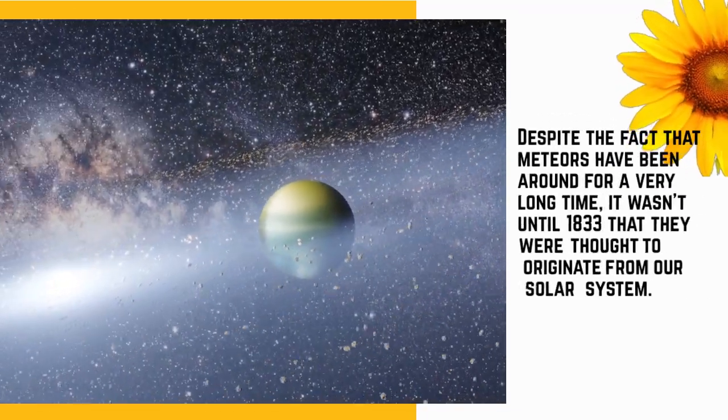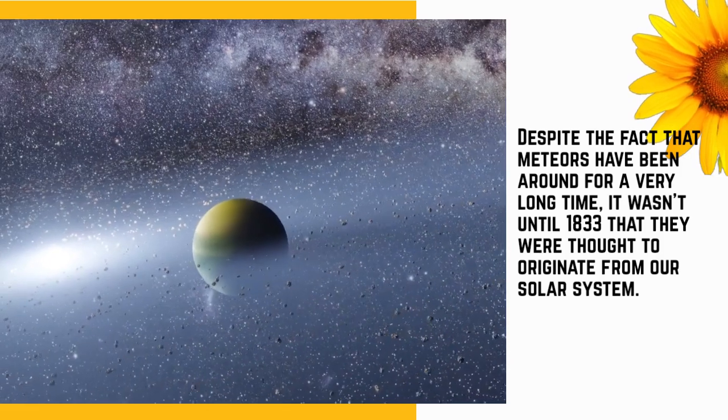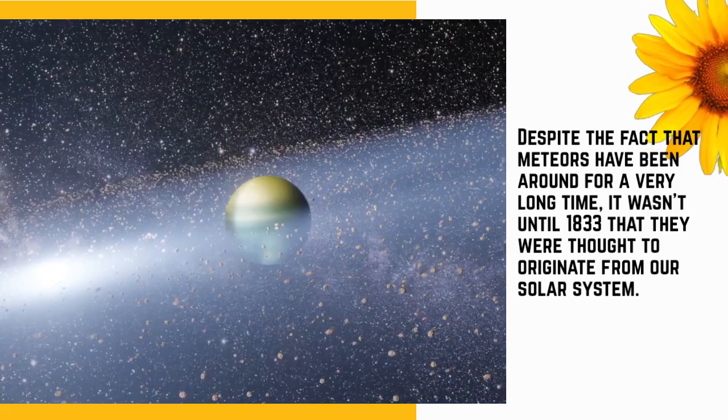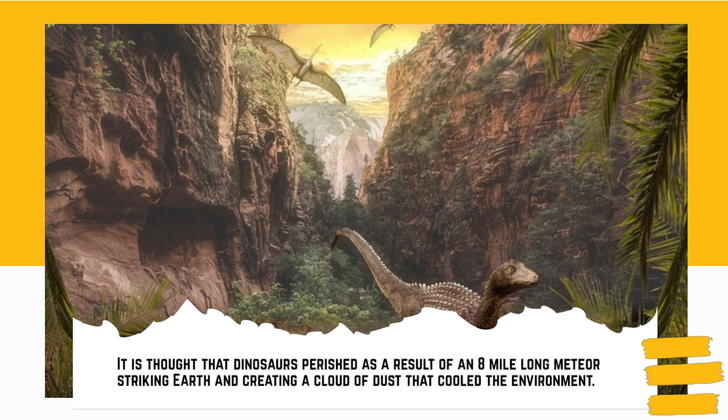Despite the fact that meteors have been around for a very long time, it wasn't until 1833 that they were thought to originate from our solar system. It is thought that dinosaurs perished as a result of an eight-mile-long meteor striking Earth and creating a cloud of dust that cooled the environment.